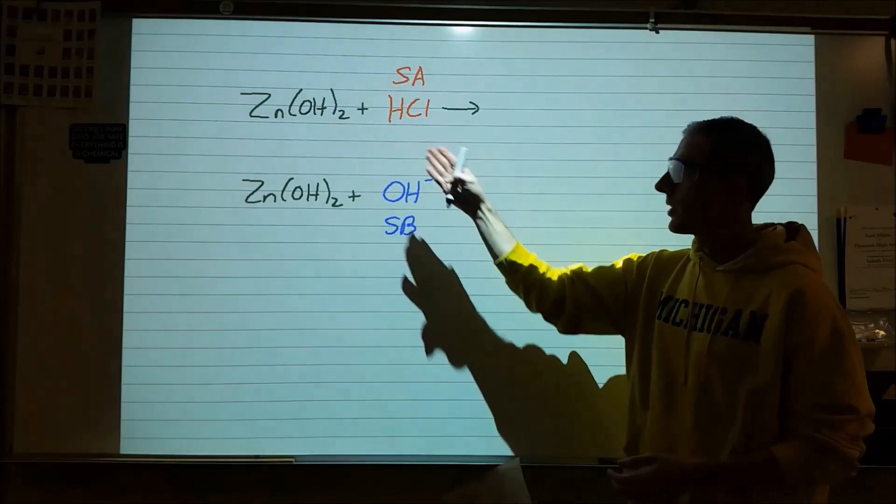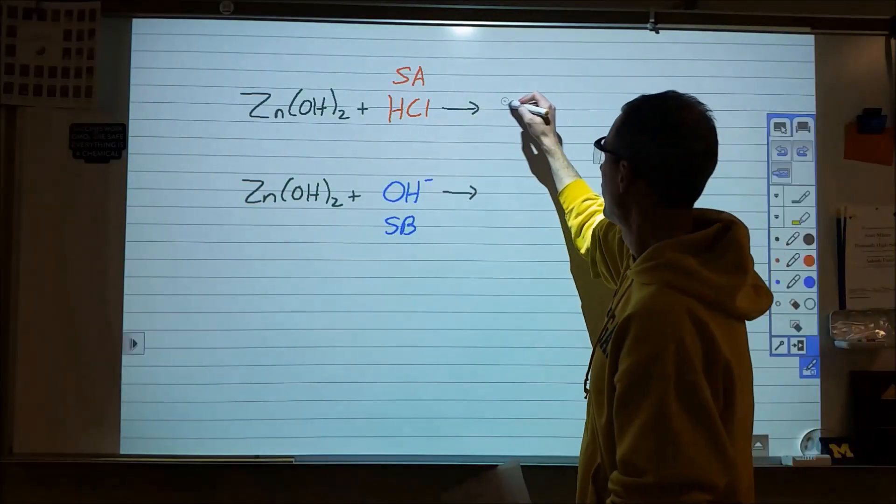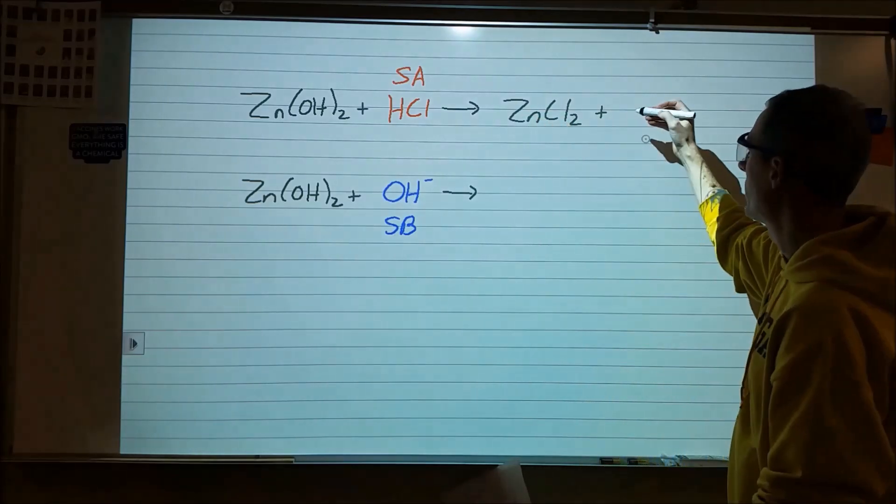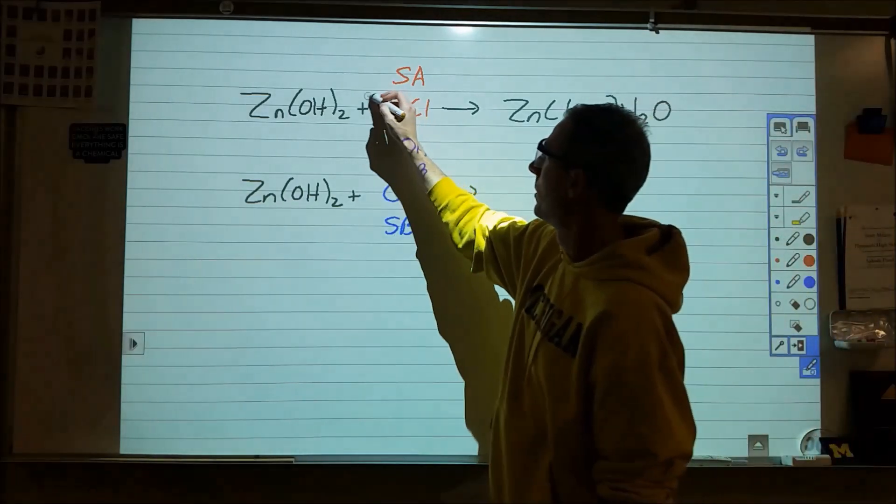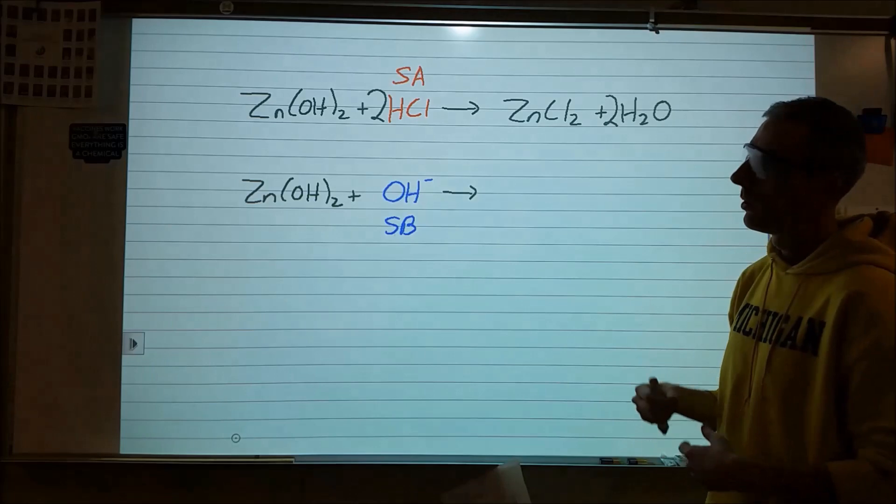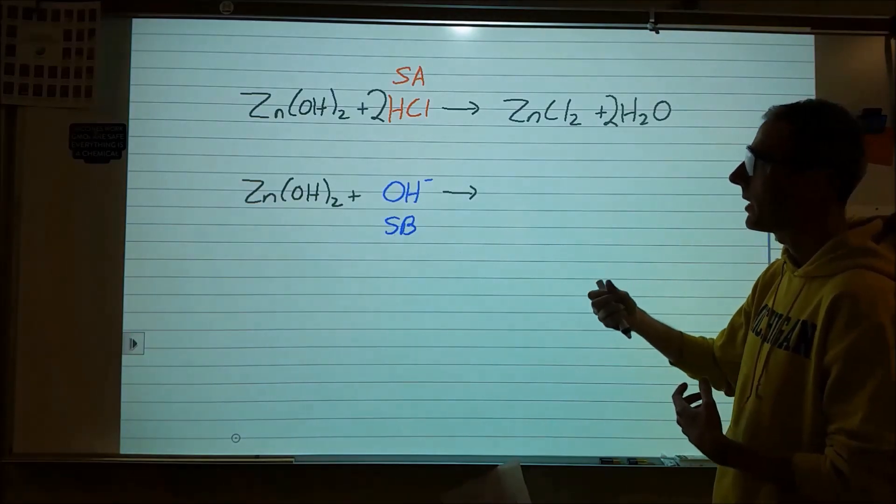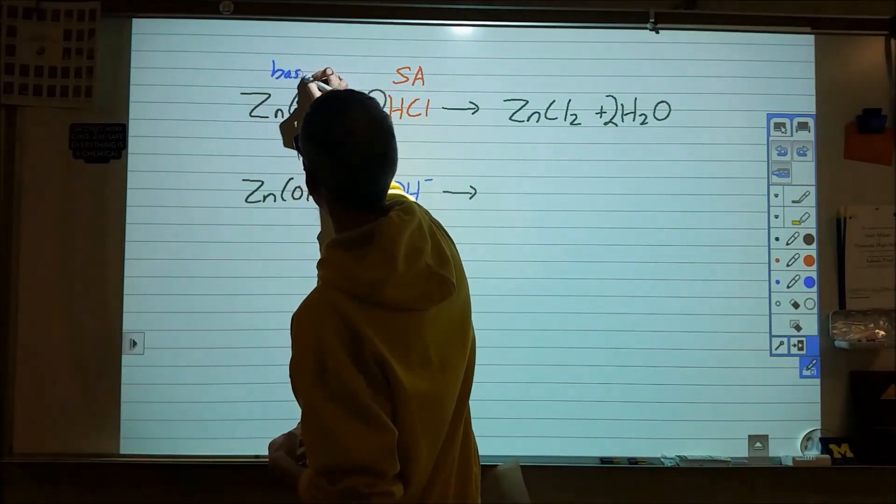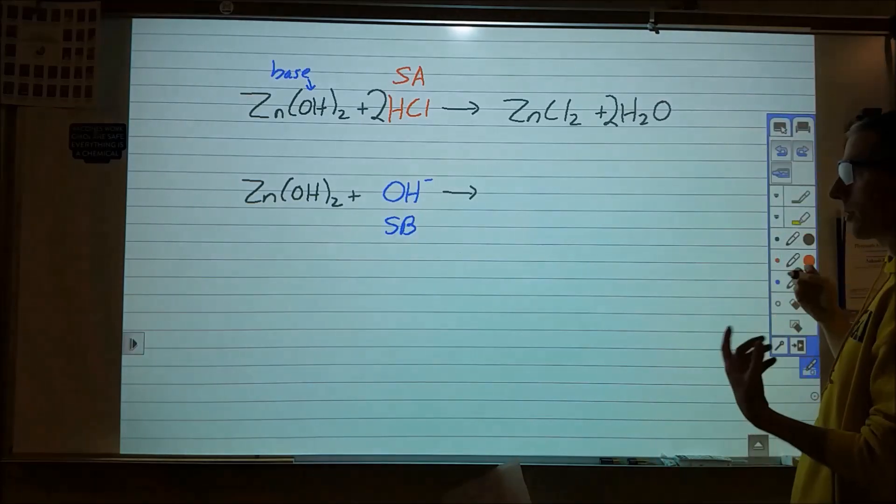So in the first case, we have the zinc hydroxide reacting with the strong acid, the hydrochloric acid. That ends up producing zinc chloride, which will be in solution, it'll be dissociated, and then water. And of course, to balance that, we would require a 2 into 2. And so the hydroxide component of the zinc hydroxide is capable of reacting as a base with that hydrochloric acid in order to get that reaction to occur.